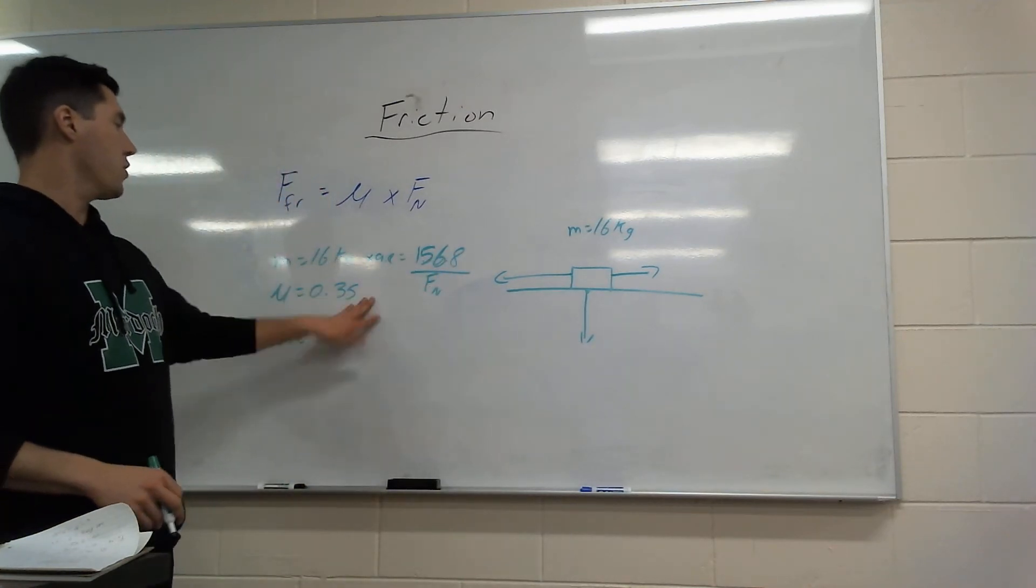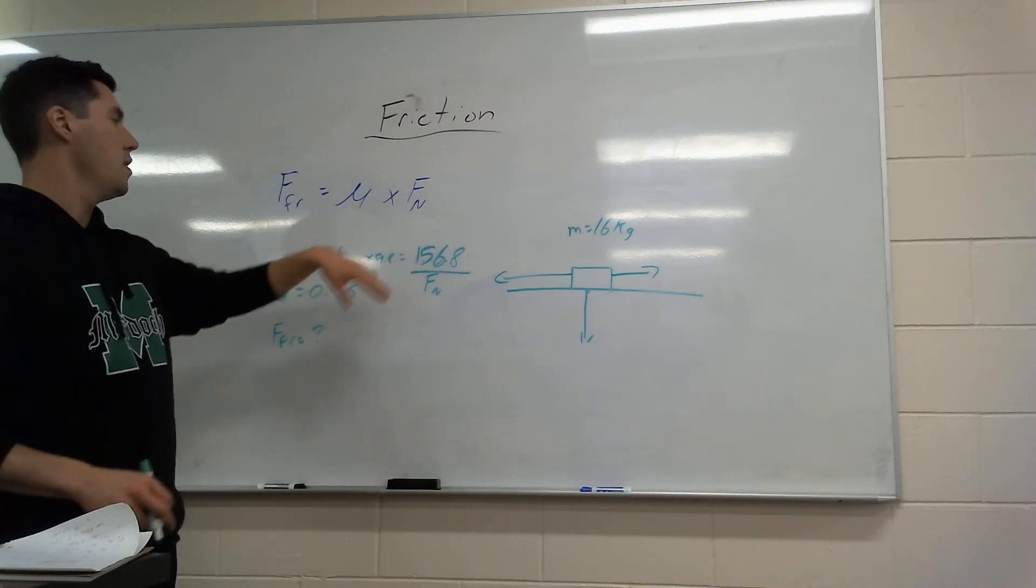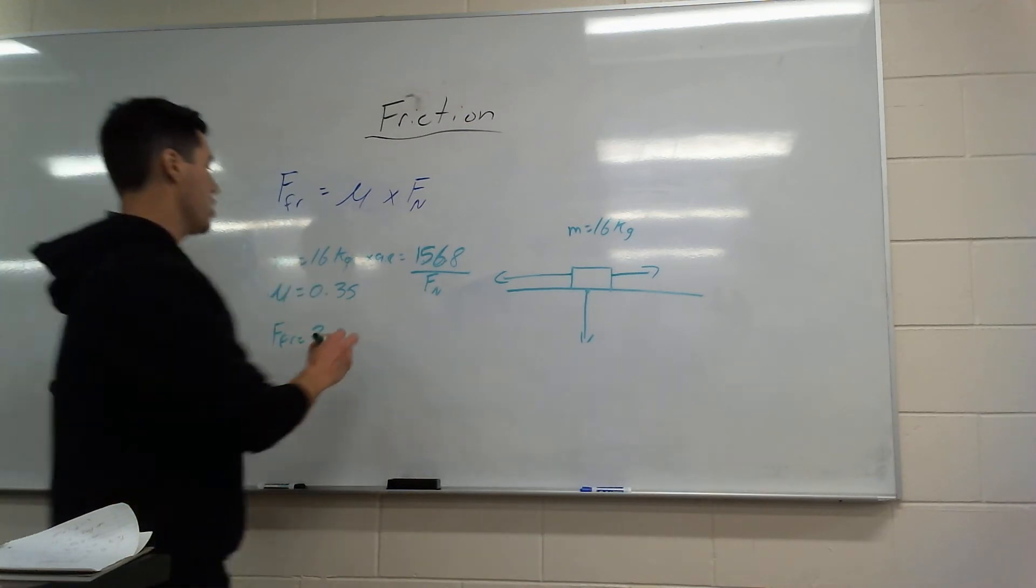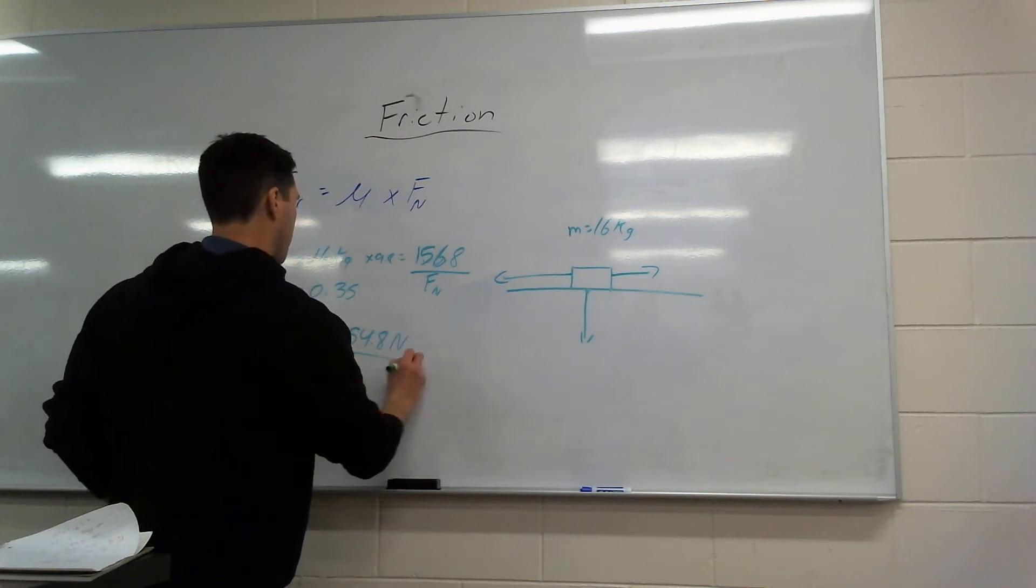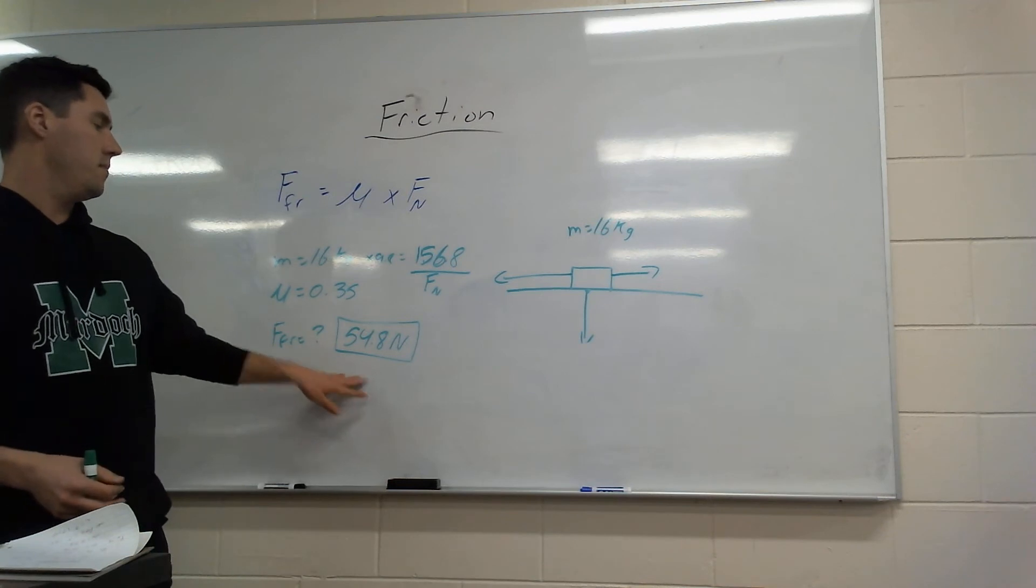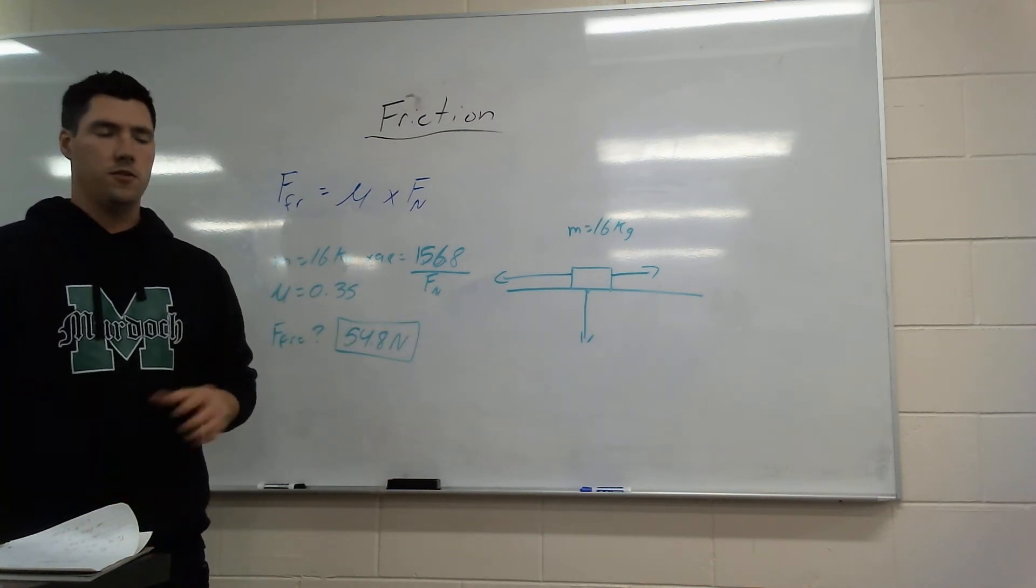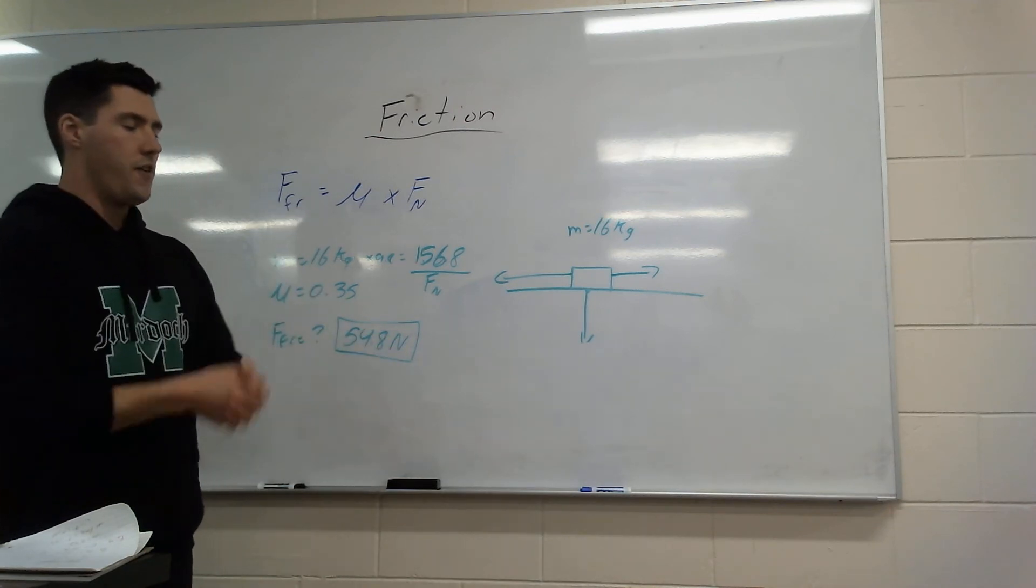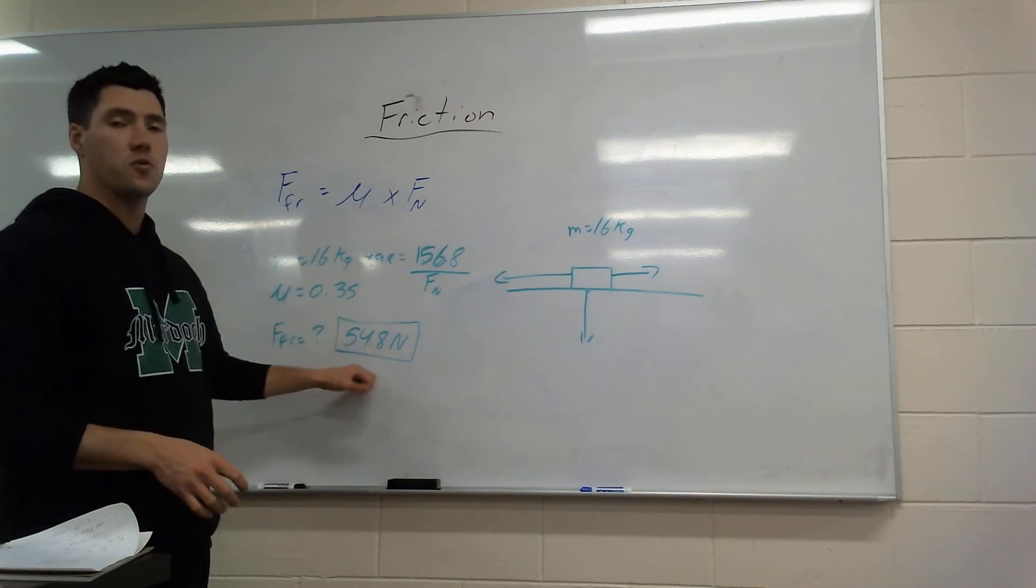And we have the coefficient. All I've got to do is just multiply these out. When I go 156.8 times 0.35, I get a force of friction of 54.8 newtons. That's how much force this object is going to resist. So let's say if I pull with 50 newtons, this object's not moving at the start. If I pull with 50 newtons, it's less than this 54.8. It's not going to move. Friction is winning.